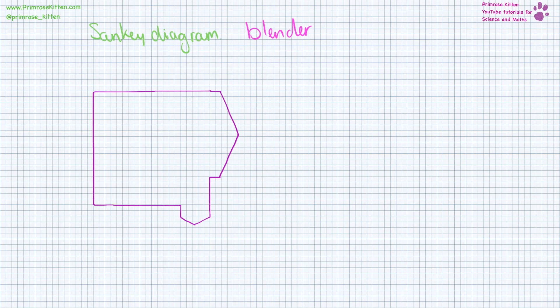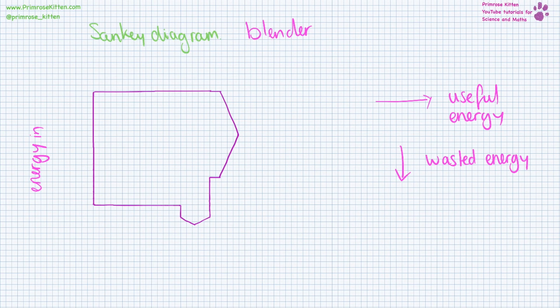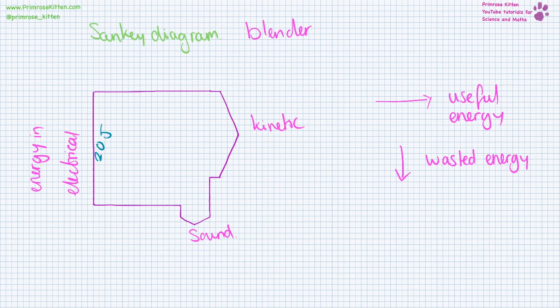When we want to visually show the efficiency of something we can use a Sankey diagram. On this side we have the energy going in, in this direction is the useful energy, and in this direction is the wasted energy. So in our example of a blender, the energy going in is electrical energy, the useful energy coming out is kinetic energy, and the wasted energy coming out is sound energy. I've switched to graph paper because we can put numbers on it — 20 squares going up could be 20 joules, 15 squares going this way could be 15 joules, and 5 squares going that way could represent 5 joules. If asked to sketch it, make sure it is roughly in proportion.